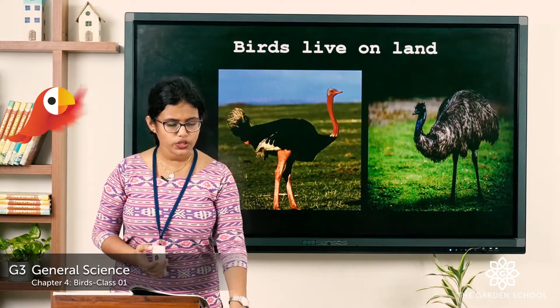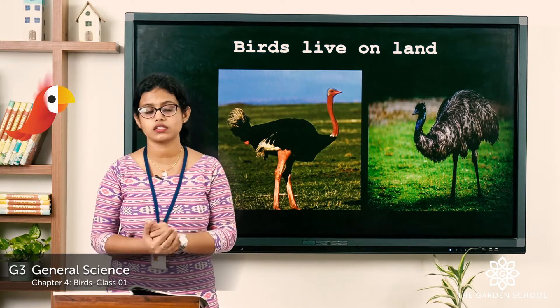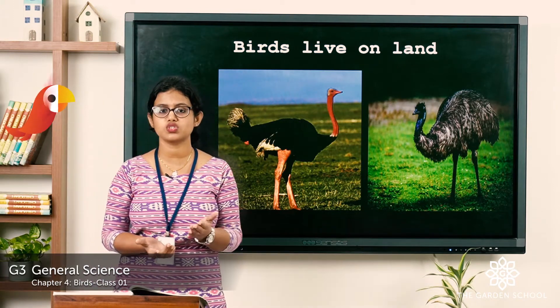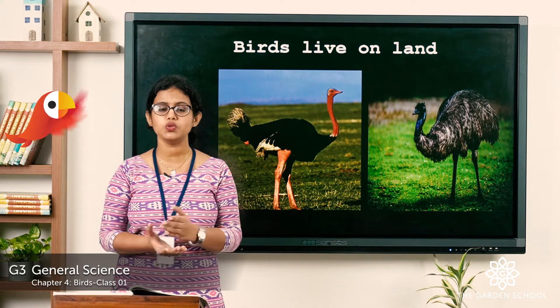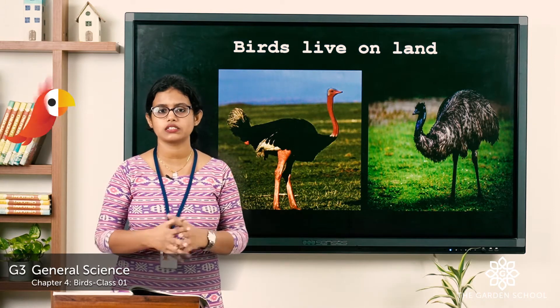There are birds which live on land, there are birds which live in water, and there are birds which live on trees. Birds that live on land include the ostrich and the emu — all these birds live on land.